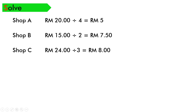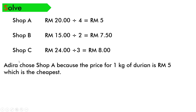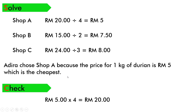Among these 3 shops, Adira will choose Shop A. Kenapa? Because the price for 1 kilogram of durian is RM5, which is the cheapest. Sebab 1 kilogram durian di kedai A bersama dengan 5 ringgit — iaitu yang termurah di antara ketiga-tiga kedai ni. Then check — we use the reverse operation. 5 ringgit times 4 will get RM20.